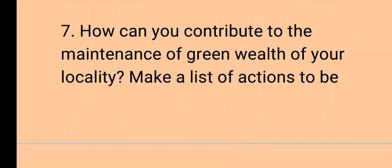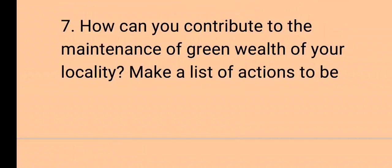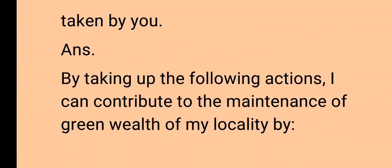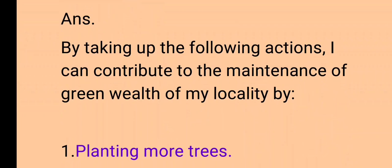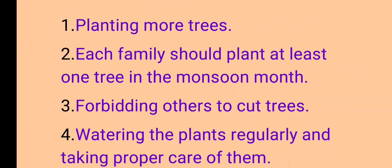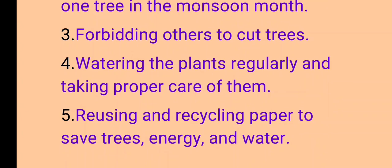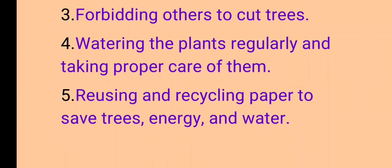Question number 7: How can you contribute to the maintenance of green wealth of your locality? Make a list of actions. By taking the following actions, I can contribute to the maintenance of green wealth: 1. Planting more trees. 2. Each family should plant at least one tree in the monsoon month. 3. Forbidding others to cut trees. 4. Watering plants regularly and taking proper care of them. 5. Reusing and recycling paper to save trees, energy, and water.